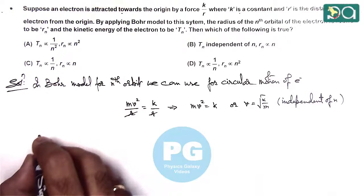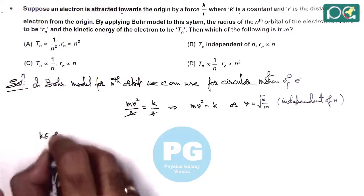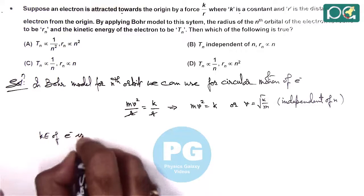Here we can write kinetic energy of the electron is Tn.